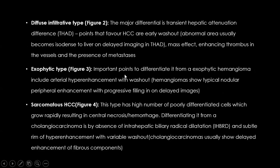The exophytic type can be confused with a cavernous hemangioma or a subcapsular lesion. Key differentiating features from hemangioma include arterial phase hyper-enhancement with washout, whereas hemangiomas typically show nodular peripheral enhancement with progressive fill-in. The sarcomatous HCC has a high number of poorly differentiated cells and grows rapidly, outstripping its blood supply, resulting in central necrosis or hemorrhage.